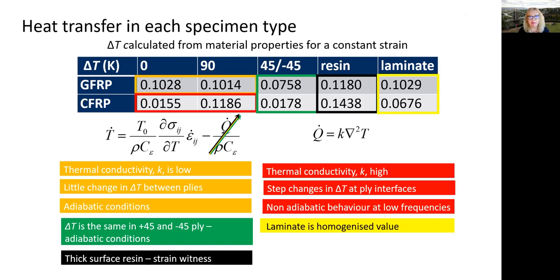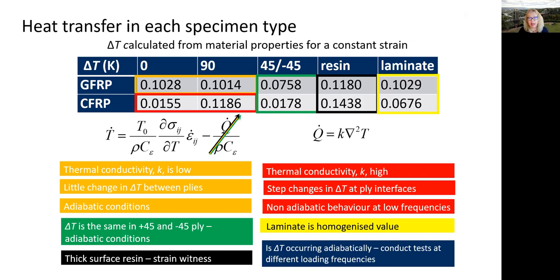If the response is coming from the entire laminate, we get a homogenized response through the stack. To check if delta T is occurring adiabatically, we can conduct our tests at different loading frequencies.